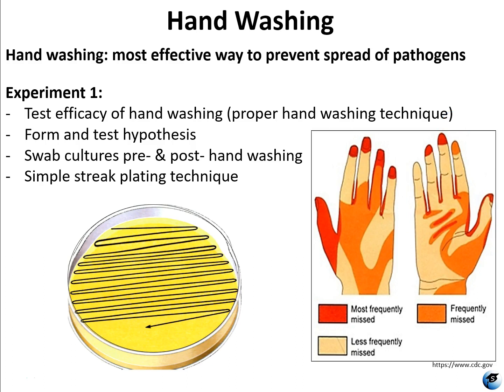You want to do that lathering for approximately 20 seconds. If you're not sure how to estimate 20 seconds, you can sing the happy birthday song twice — that's approximately 20 seconds. Then finally, you rinse the hands again and dry with paper towels. Paper towels are cleaner than air blow dryers, because those are actually blowing more bacteria onto your hands.